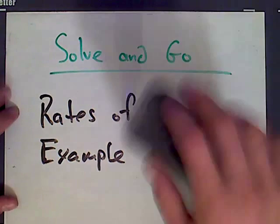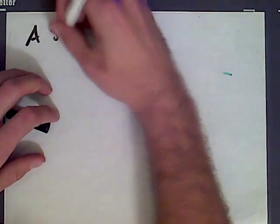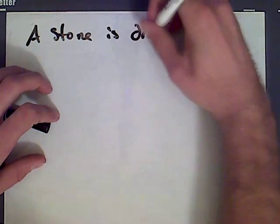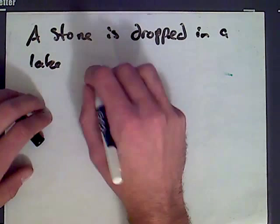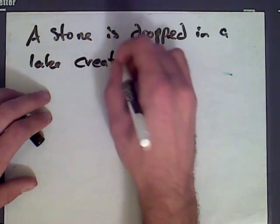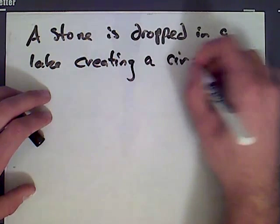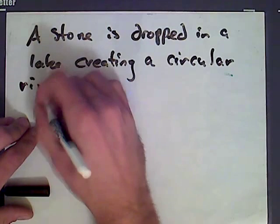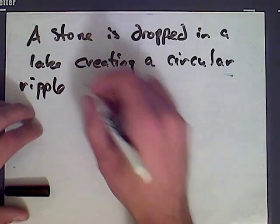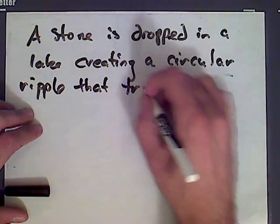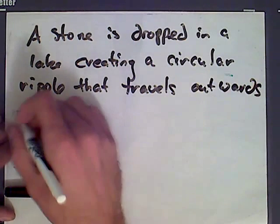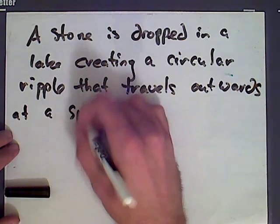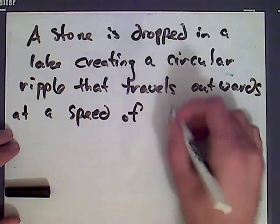Let me give you the problem. I'll write it out. A stone is dropped in a lake, creating a circular ripple that travels outwards at a speed of 60 centimeters per second.